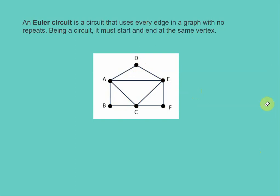Another Euler circuit in this same diagram: we could start at C and go to B, A, D, E, F, C, E, A, and back to C again.